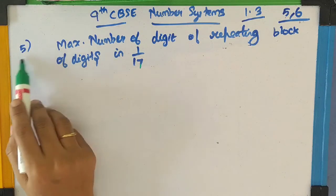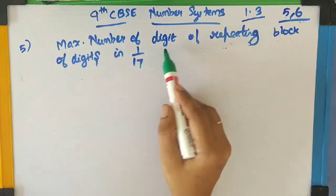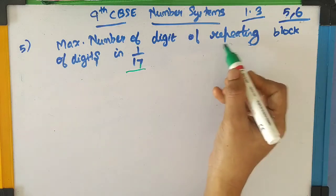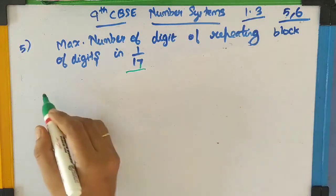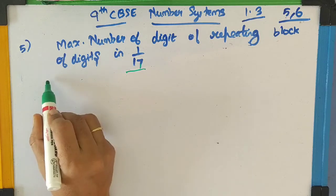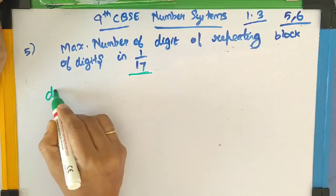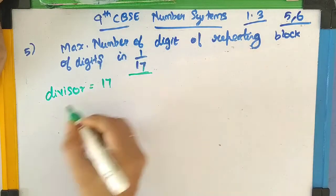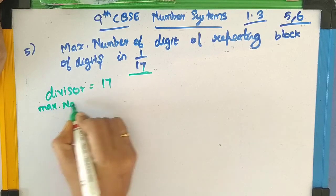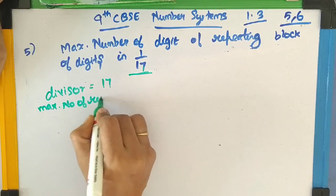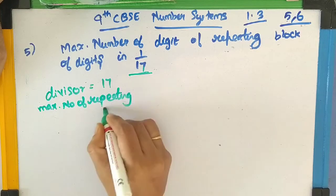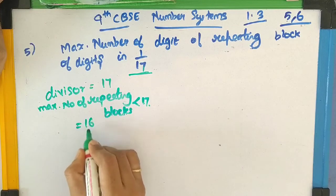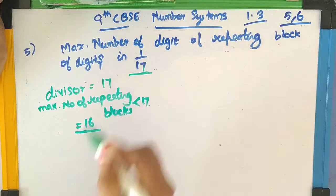Here we have to find the maximum number of digits of the repeating block of digits in the fraction 1 by 17. We have to use the long division method. The divisor is 17, so the maximum number of digits of the repeating block should be less than 17. It can be any number but it should be less than 17, so the maximum number of repeating blocks should be 16. We can verify whether it is 16 or not.